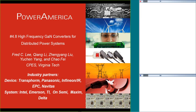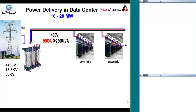The second topic is about using GAN devices for data center related applications. This page shows a data center. The larger data center is up to about 20 megawatts. For data centers, you start to draw power from medium voltage — smaller data centers will be 4160 volts, larger ones will be 13.8 kilovolts, and even larger ones would draw power from 30 kilovolt utility lines. You then go through a transformer and drop down to 480 volts three phase, with as much as 3000 ampere current through the cable, distributing power to various data halls.